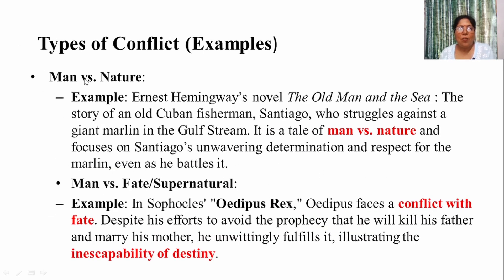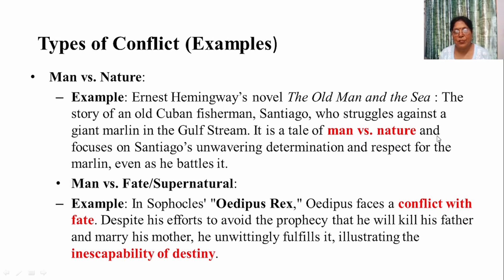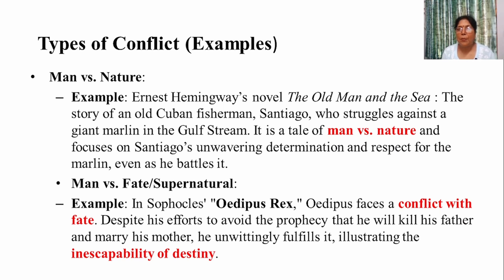The example of man versus nature is Hemingway's novel The Old Man and the Sea. It is the story of an old Cuban fisherman, Santiago, who struggles against a giant marlin — a fish — in the Gulf Stream. Here the struggle is between Santiago and that fish. It is a tale of man versus nature, focusing on Santiago's unwavering determination and respect for the marlin even as he battles it.